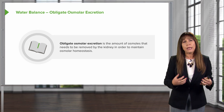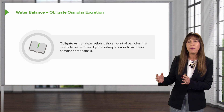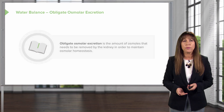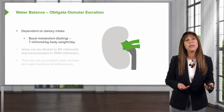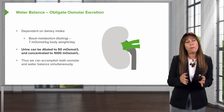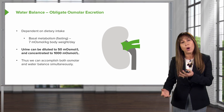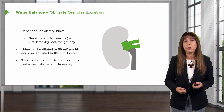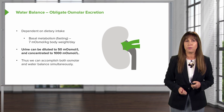When we think about water balance, we must also consider obligate osmolar excretion — the amount of osmoles that needs to be removed by the kidney to maintain osmolar homeostasis. It's dependent on dietary intake; our basal metabolism in the fasting state can generate about 7 milliosms per kilo per day. Our urine can be diluted to about 50 milliosms per liter, or concentrated as high as 1,000 milliosms per liter. By manipulating urine osmolarity, we can accomplish both osmolar and water balance simultaneously.